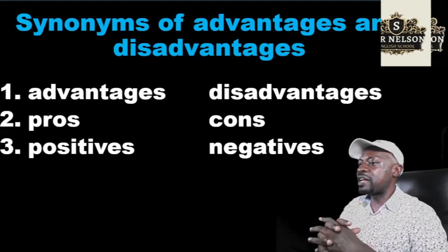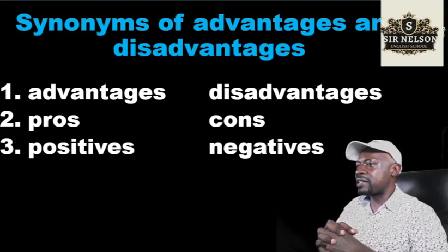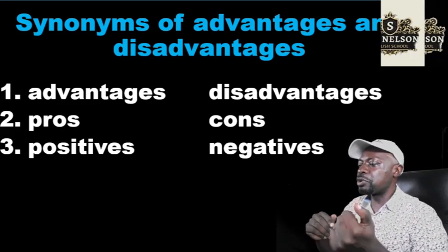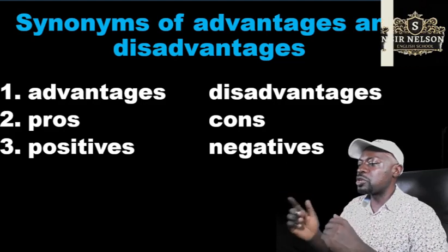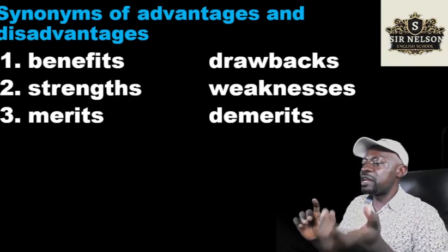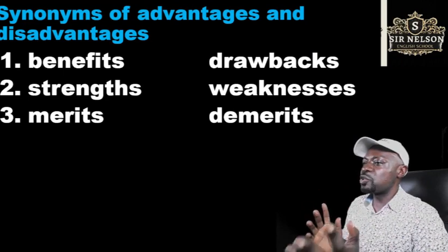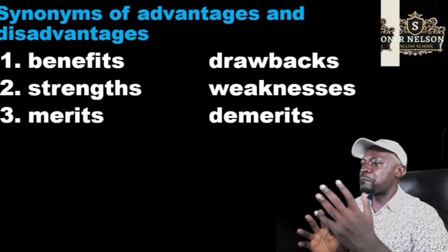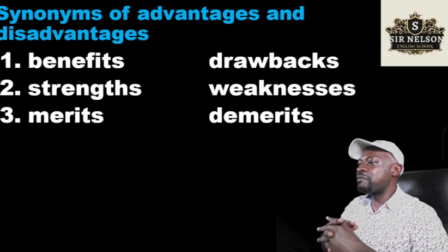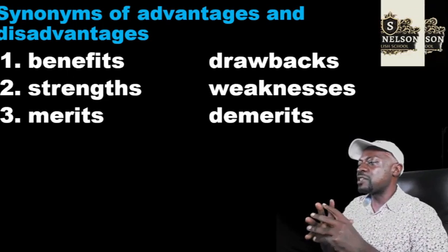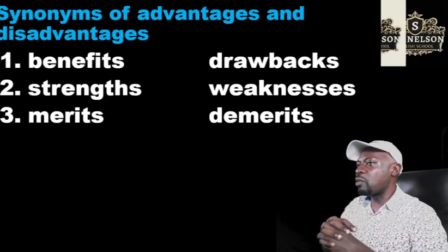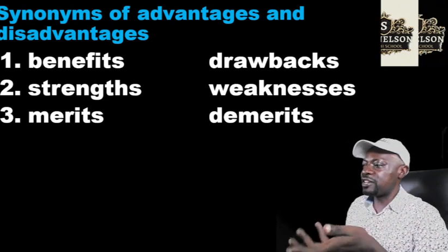Instead, you can use these — they usually go in pairs: advantages/disadvantages, pros/cons, positives/negatives, benefits/drawbacks, strengths/weaknesses, merits/demerits. Now you have very many synonyms, so there is no point in repeating the word advantage or disadvantage.